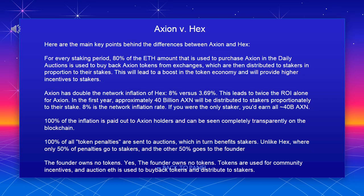This will lead to a boost in the token economy and will provide higher incentives to stakers. Axion has double the network inflation of Hex — 8% versus 3.69% — which leads to twice the ROI alone for Axion. In the first year, approximately 40 billion AXN will be distributed to stakers proportionately to their stake. 8% is the network inflation rate, and if you were the only staker, you'd earn all 40 billion AXN. 100% of the inflation is paid out to Axion holders and can be seen completely transparently on the blockchain.